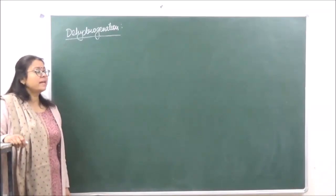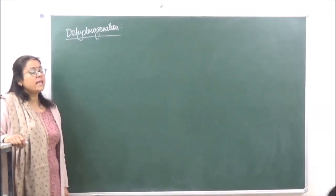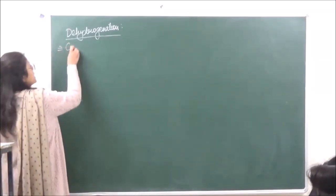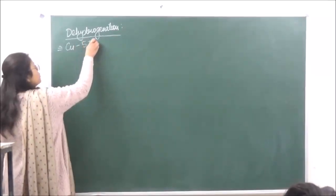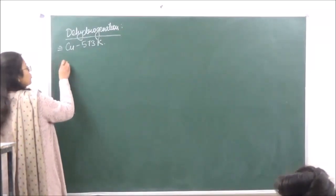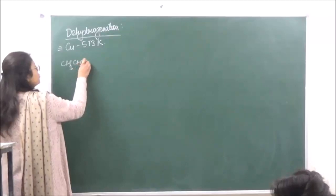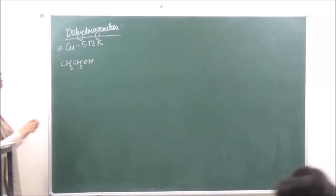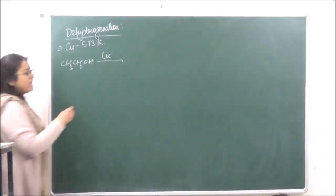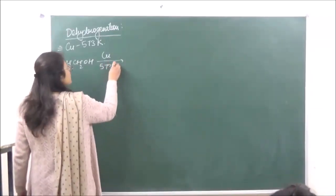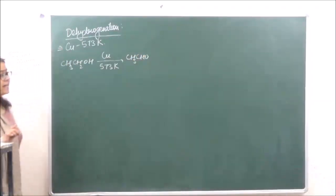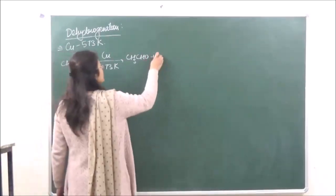In this reaction, primary, secondary, and tertiary alcohols behave differently. Generally, dehydrogenation is done in the presence of copper at a temperature of 573 Kelvin. So for primary alcohols of the type ethyl alcohol, when subjected to copper at 573 Kelvin, this gives us the respective aldehyde and hydrogen that is eliminated.